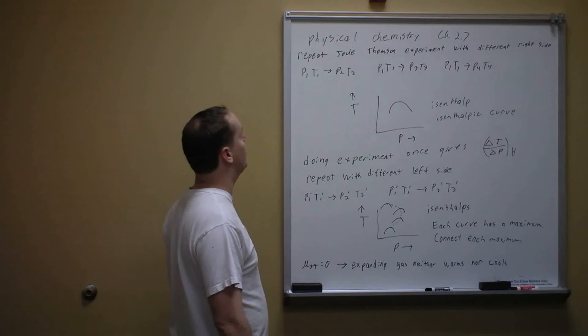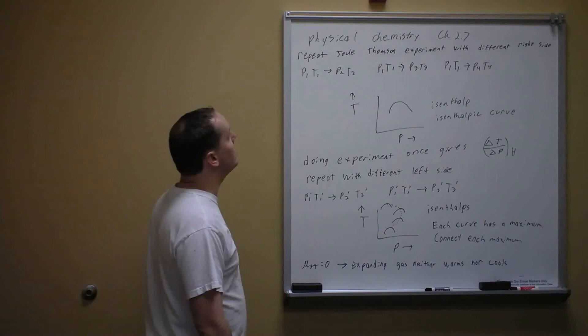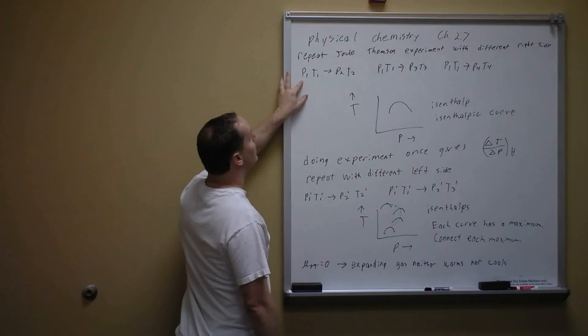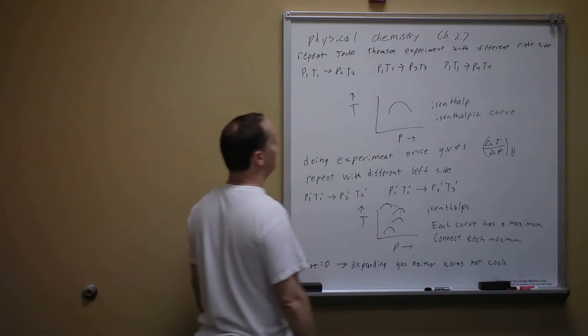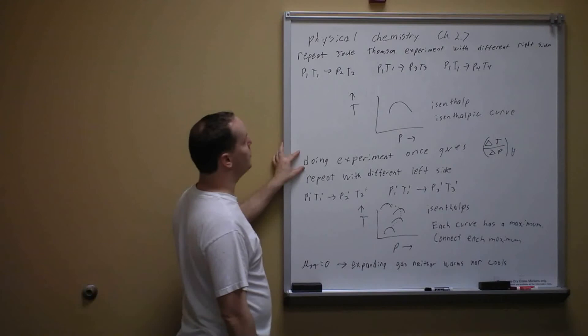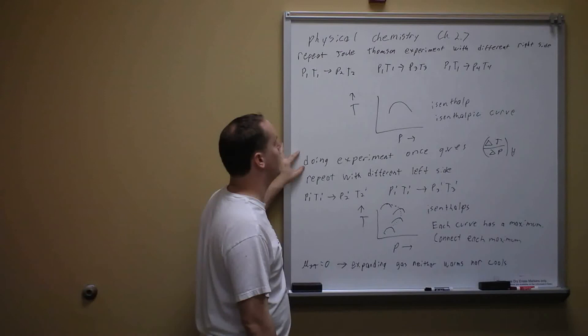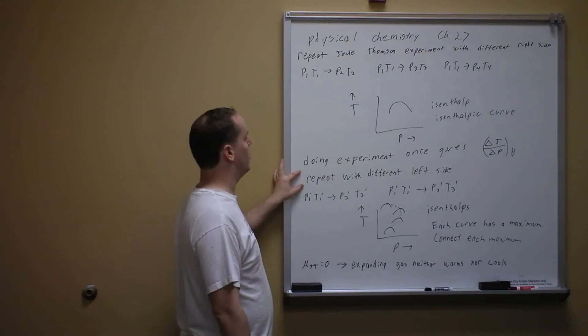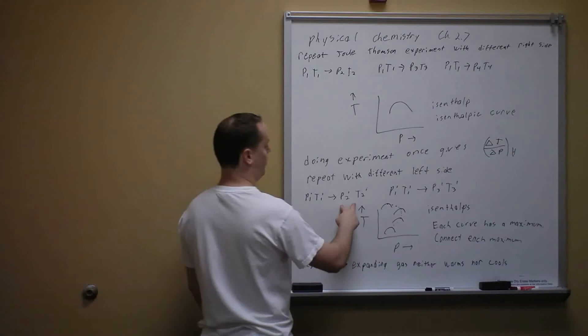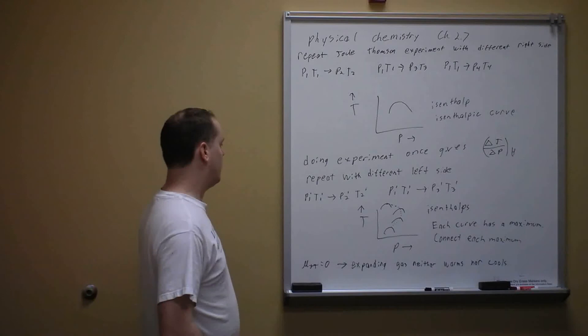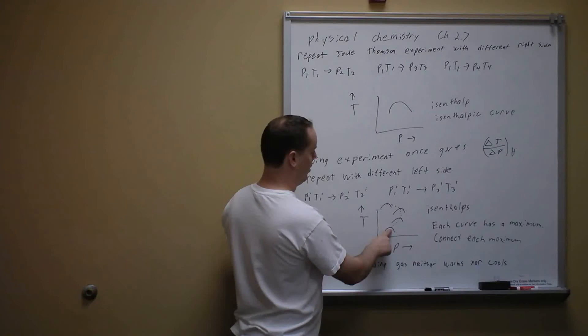To map out this behavior, we repeat the same Joule-Thompson experiment with the same starting conditions P1, T1, but vary the right side to different P2, T2 values, creating an isenthalpic curve or isenthalp on a temperature-pressure graph. Repeating the entire experiment with different starting conditions P1, T1 prime generates multiple isenthalps. Each isenthalp has a maximum where μJT equals zero, and connecting all those maxima creates the inversion curve — the boundary between cooling and warming on expansion.